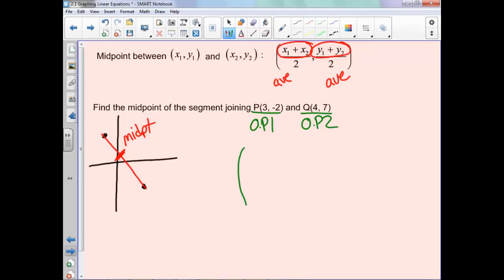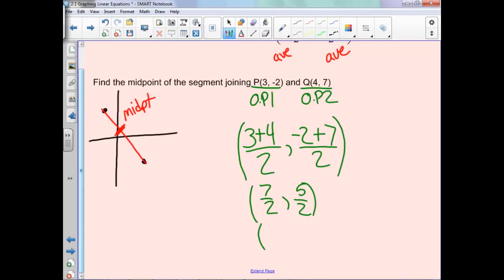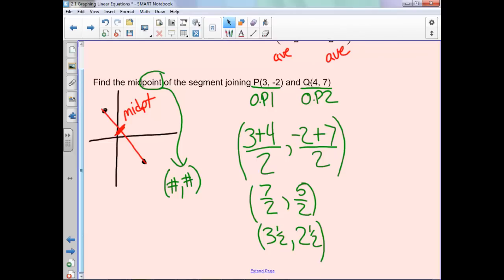So our formula, we have our x1, which is our first x coordinate, or 3, plus our second x coordinate, which is 4, all over 2. And then our first y coordinate, which is negative 2, plus our second y coordinate, which is 7, and then, once again, divide by 2. So we'll have 7 over 2, and then 5 over 2. If you wanted to change this to 3 and a half and 2 and a half, you could. That's fine. But one thing to point out, notice when you talk about midpoint, it's a point. So your end answer should always be written as an ordered pair. So you see the word point, you should have an ordered pair. And that is all for section 1.